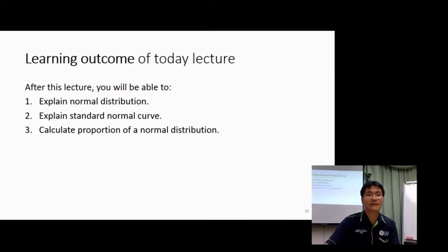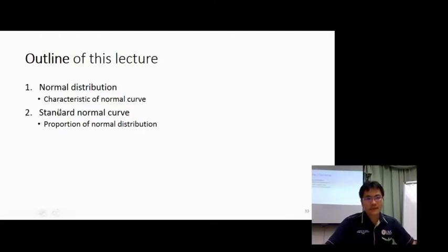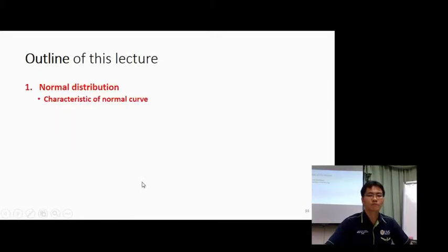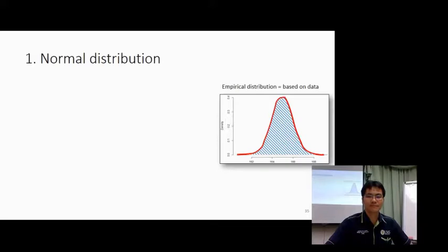These are very basic concepts you learn in secondary school. Normal distribution is about the characteristics of the normal curve. The standard normal curve is a normal curve, but it is a standard one that everyone uses as a reference. Your own normal curve comes from your data set, which may differ from mine, but there is one standard normal curve used across the world as a reference.